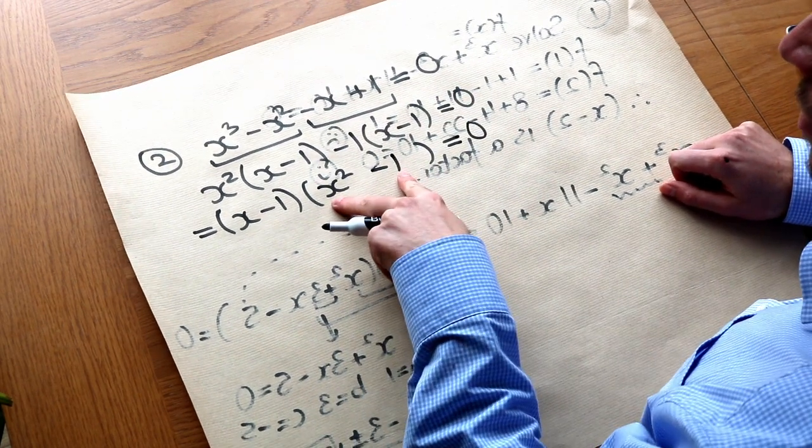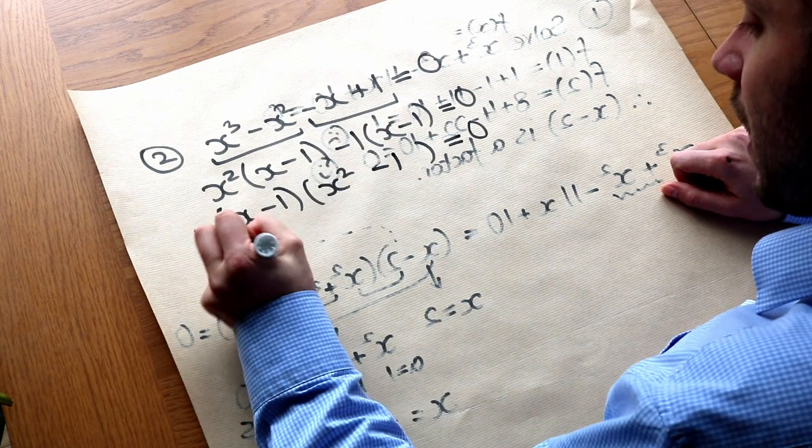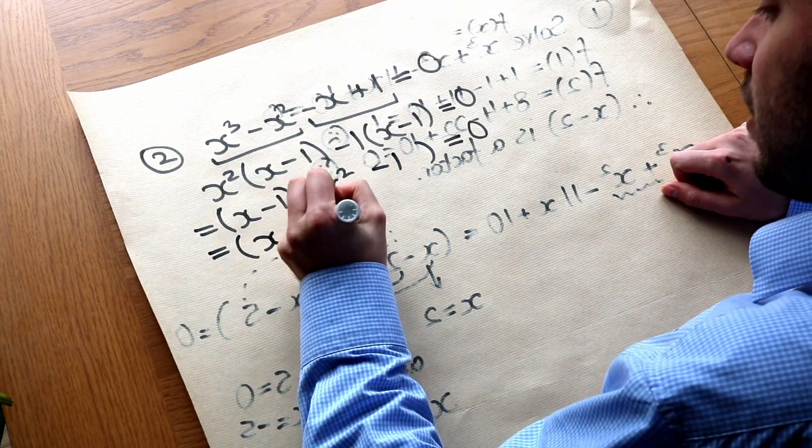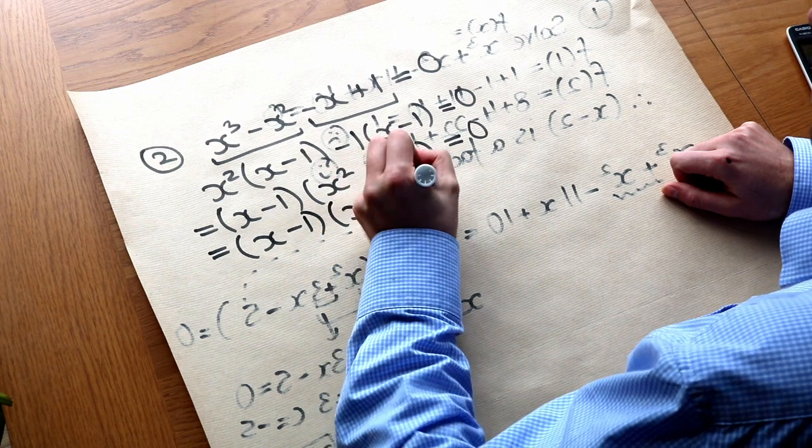And now this, look, that's a difference of two squares, so we can factorise that again to give you x plus one x minus one equals zero.